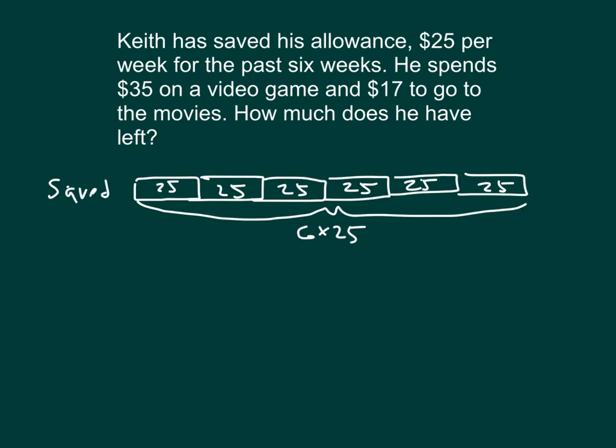So that's the amount he has. Now, how much does he spend? He spends $35 on the video game and then he also spends $17 more for going to the movies. This is the amount that he spends: $35 plus $17, which gives us $52.